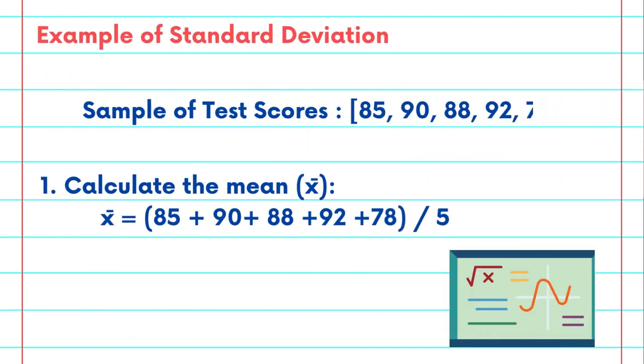So let's dive into an example. Let's calculate the standard deviation for a sample of test scores. So here we can see five test scores: 85, 90, 88, 92, and 78.